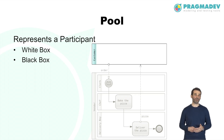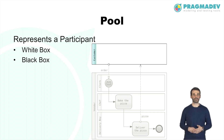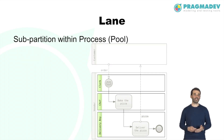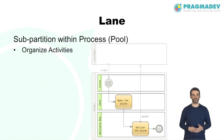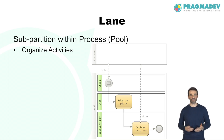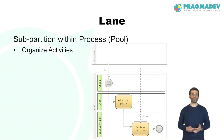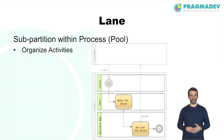Alternatively, a pool can be shown as a black box with all details hidden, like the customer. A lane is a sub-partition within a process, often within a pool. Lanes organize and categorize activities within a pool, and their meaning is up to the modeler — often used for internal roles. In this example, the delivery boy is an internal role of the vendor, responsible for delivering the pizza to the customer.